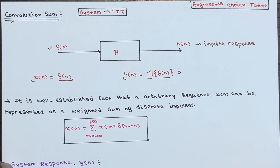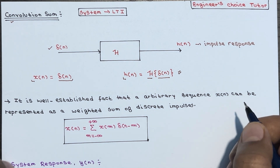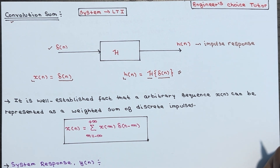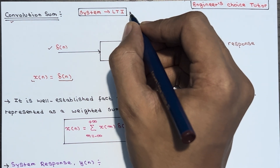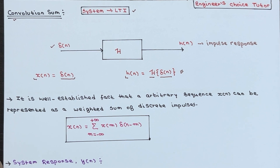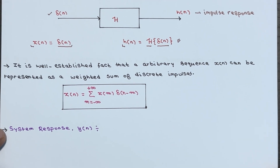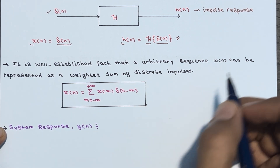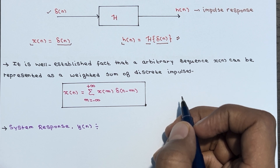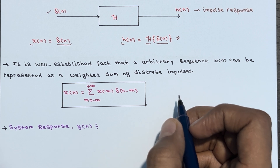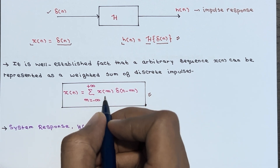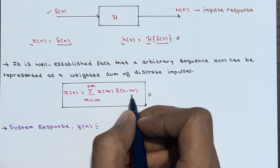It is important to note that the system is initially assumed to be in a relaxed state, meaning it possesses zero initial conditions. We already know that an arbitrary sequence X(n) can be represented as a weighted sum of discrete impulses: X(n) = Σ X(m)·δ(n−m), where m ranges from −∞ to +∞.